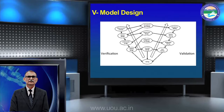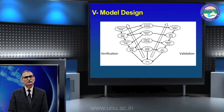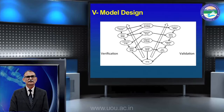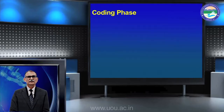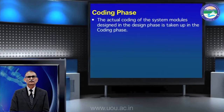We have to do parallel processes: requirement analysis, coding diagram, and validation phase. We have to do this in each phase — system design complete, parallel system design, coding and testing parameters, and the coding phase. The actual coding of the system modules designed in the design phase is taken up for coding.